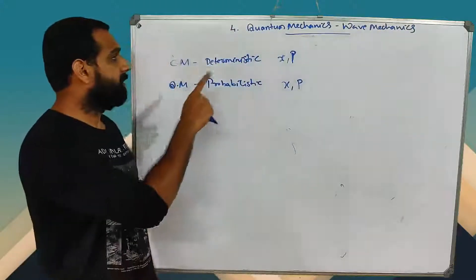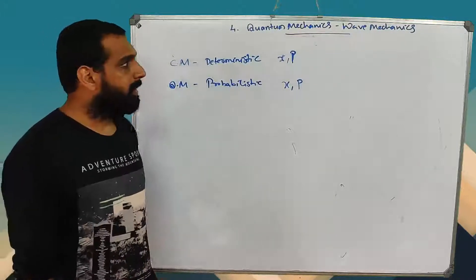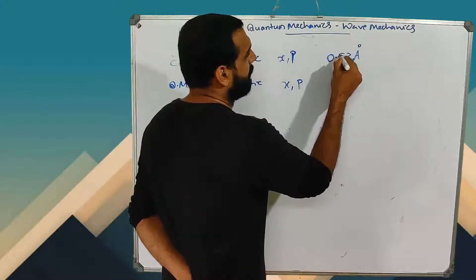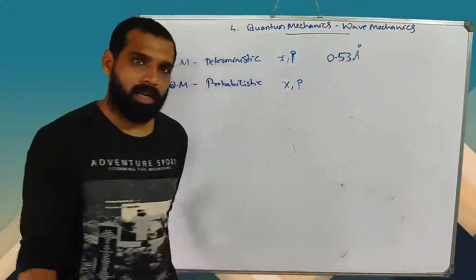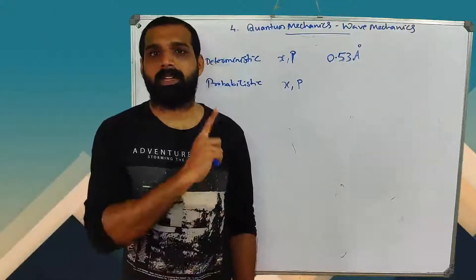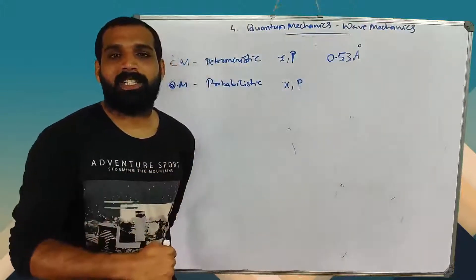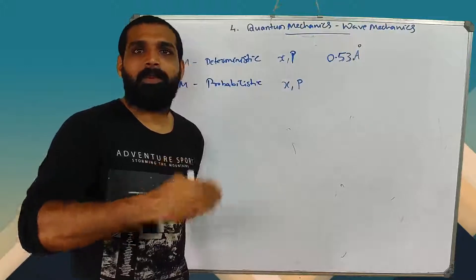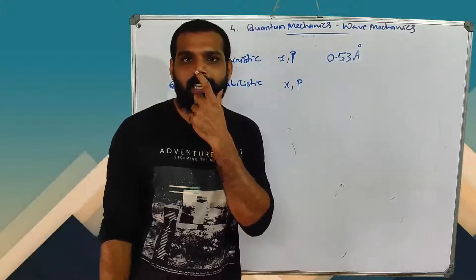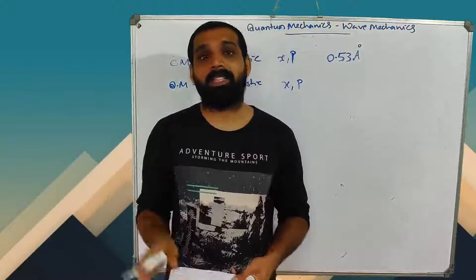Classical mechanics is deterministic and quantum mechanics is probabilistic. In the Bohr model, the first Bohr orbit radius is 0.53 Ångström. In quantum mechanics, 0.53 Ångström is the most probable radius of a hydrogen atom — not a definite orbit, but the most probable one. That is the distinction between deterministic and probabilistic.